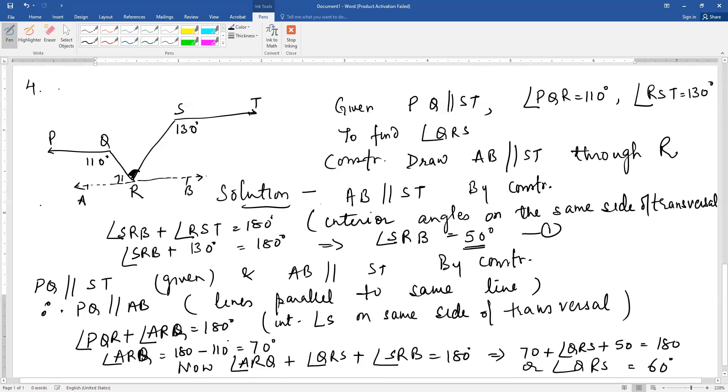Now you have calculated this angle as 70 and this angle as 60. The total should be 180 because ARB is a straight line. Therefore 70 plus angle QRS plus 60 equals 180, which gives angle QRS equal to 60 degrees.